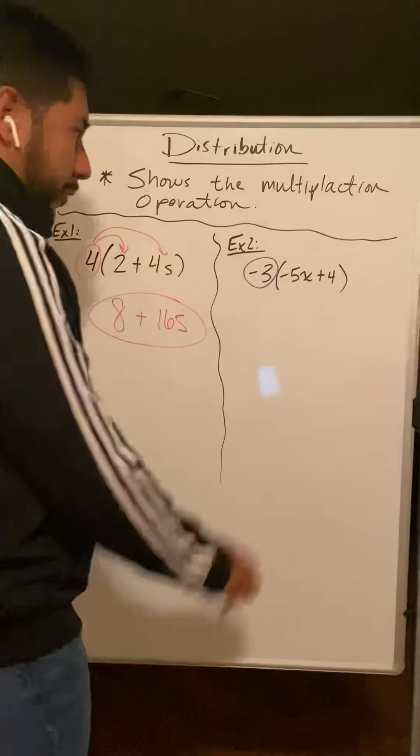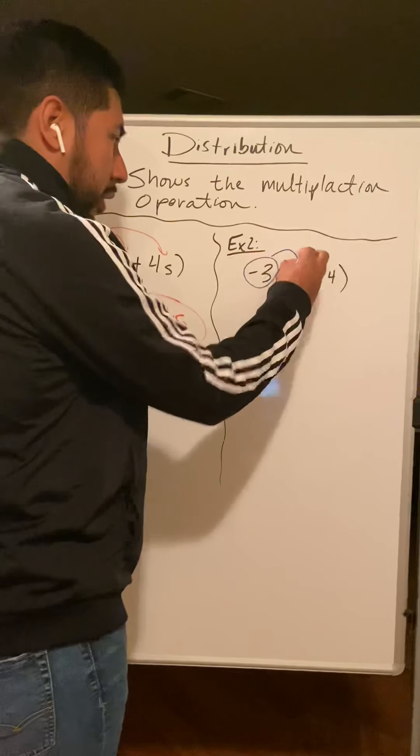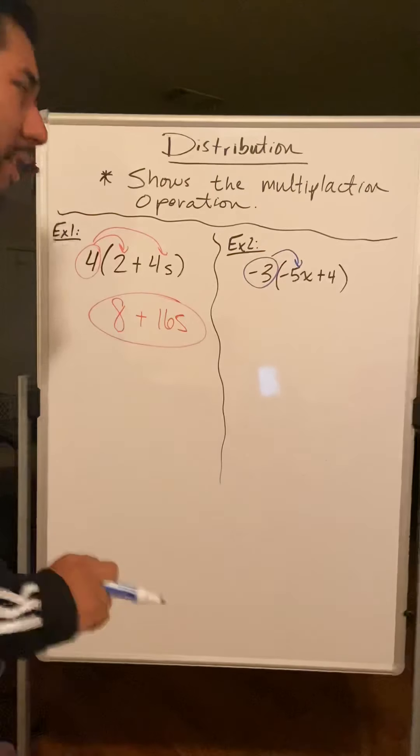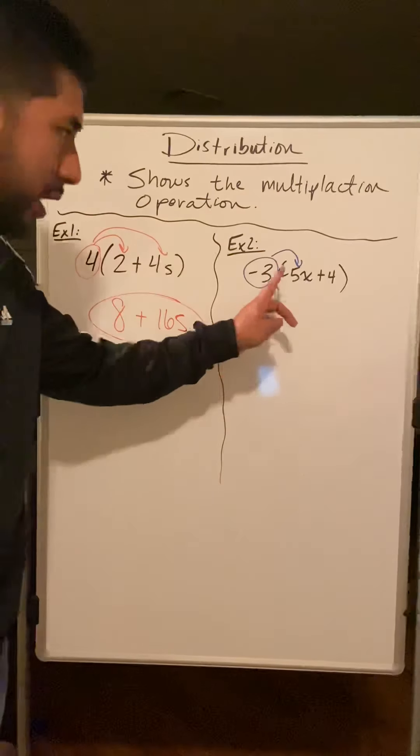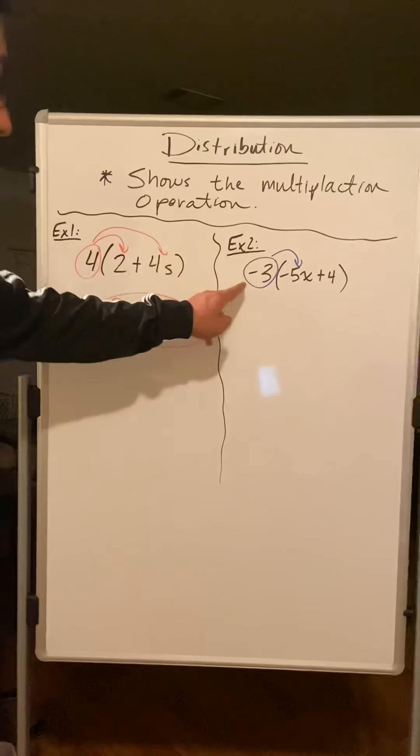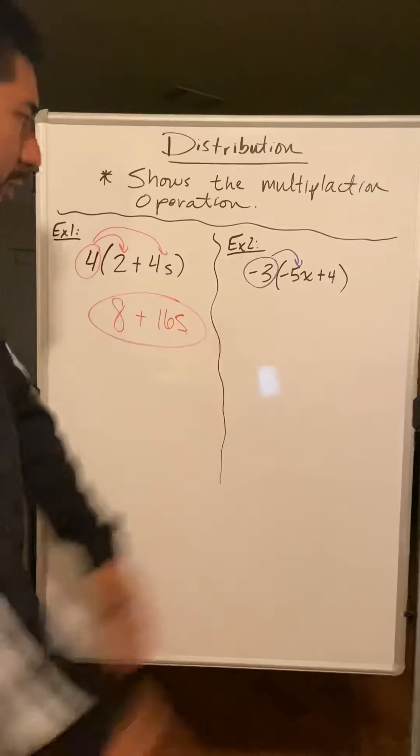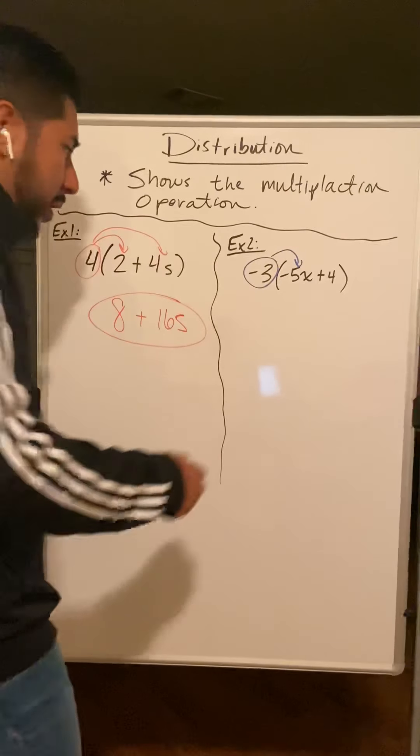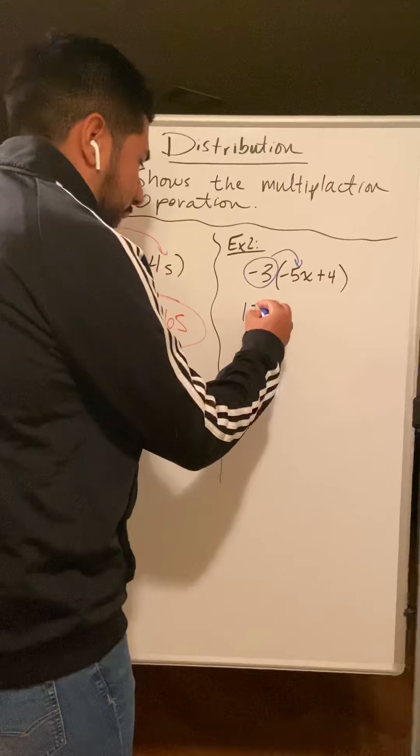It's in front of the parentheses. I'm going to use that person to multiply into each term, so let's do it. Be careful, it's a negative three. Negative three times negative five x. How do I know it's a negative five? Because there's a negative sign right in front of it. Negative three times negative five - hopefully you know negative times negative does give me a positive 15.